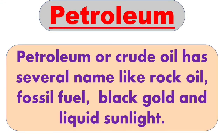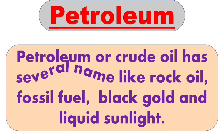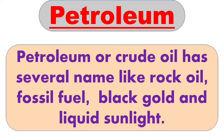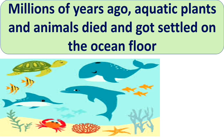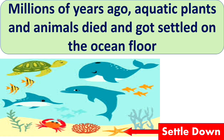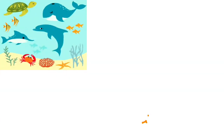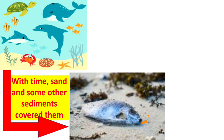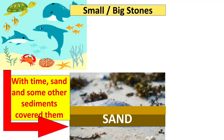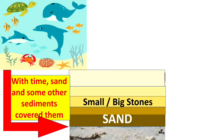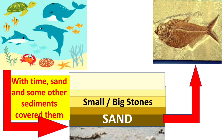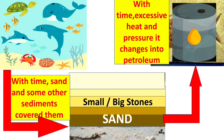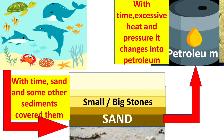Next is petroleum. Petroleum or crude oil has several names like rock oil, fossil fuel, black gold, and liquid sunlight. Millions of years ago, aquatic plants and animals died and got settled on the ocean floor. With the passage of time, sand, small stones, and other sediments covered them. They became fossils, and with excessive heat and pressure over time, it changed into petroleum.